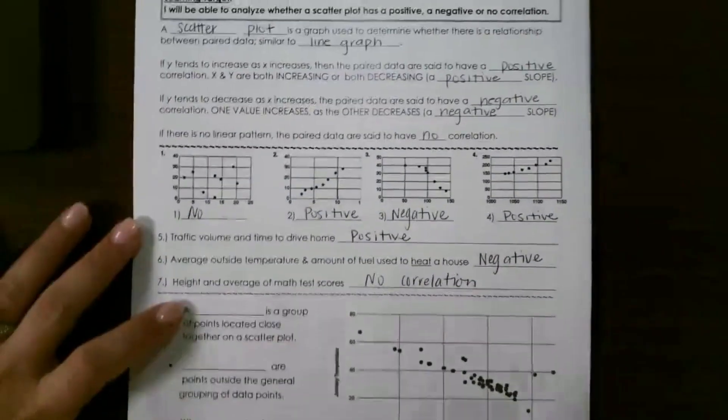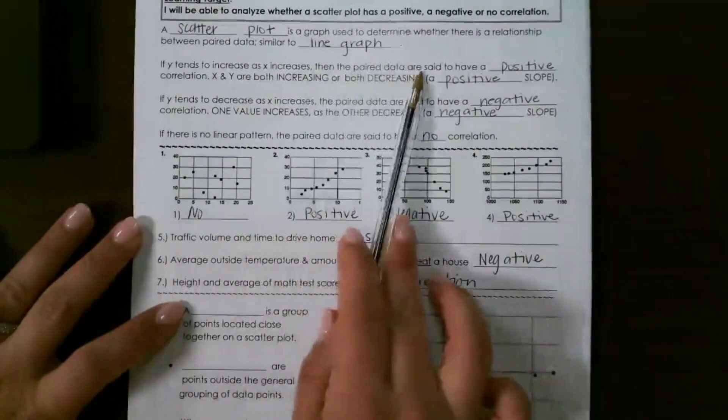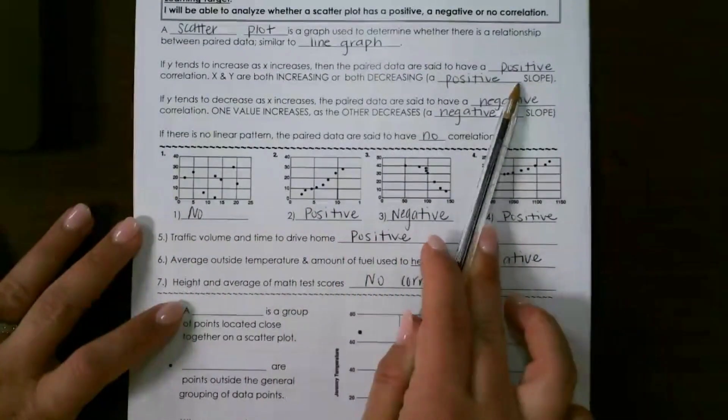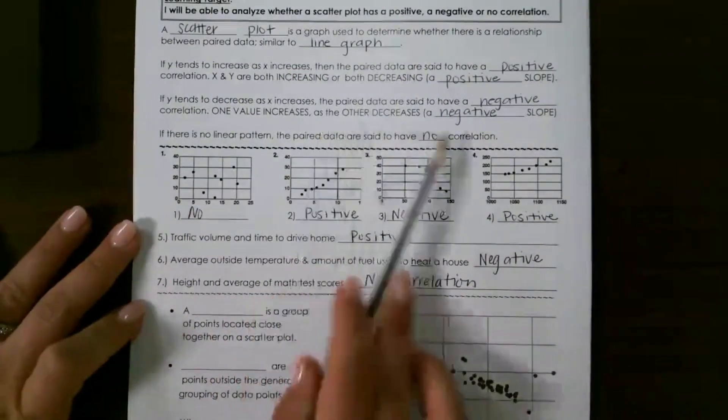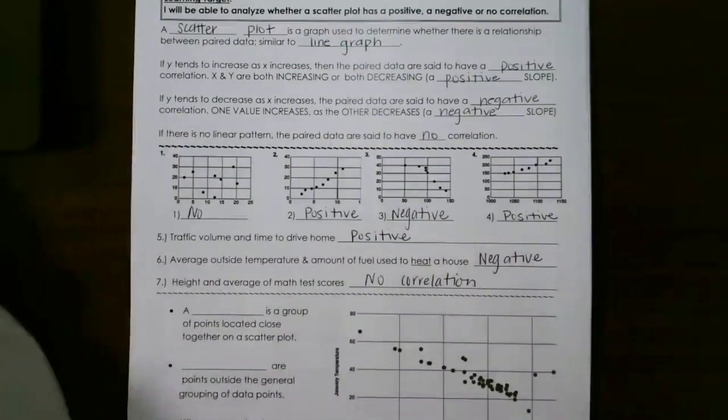So remember, just pay attention to if both are increasing or decreasing, which will give you positive. And if one is increasing while the other decreases or the other way around, it will give you a negative correlation.